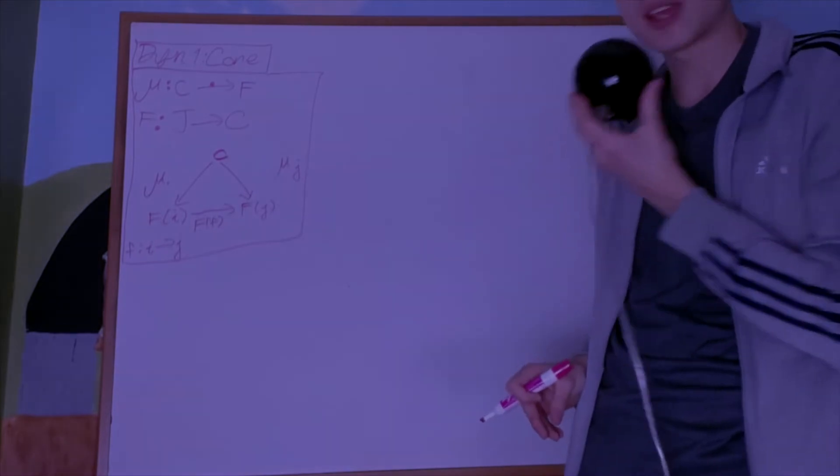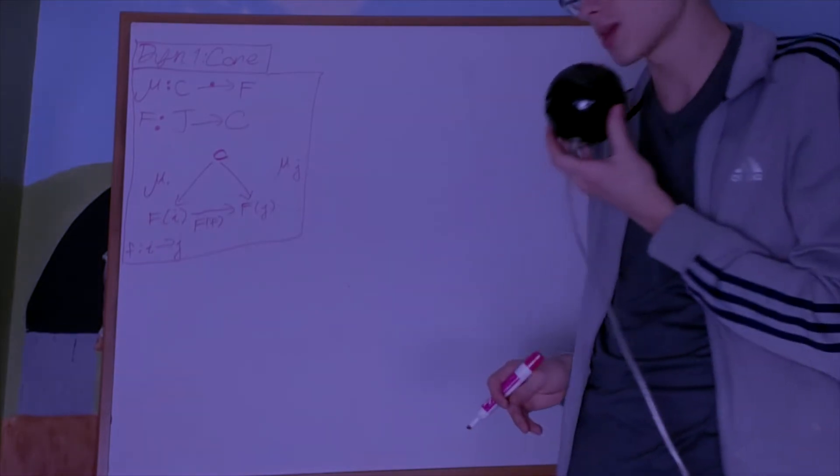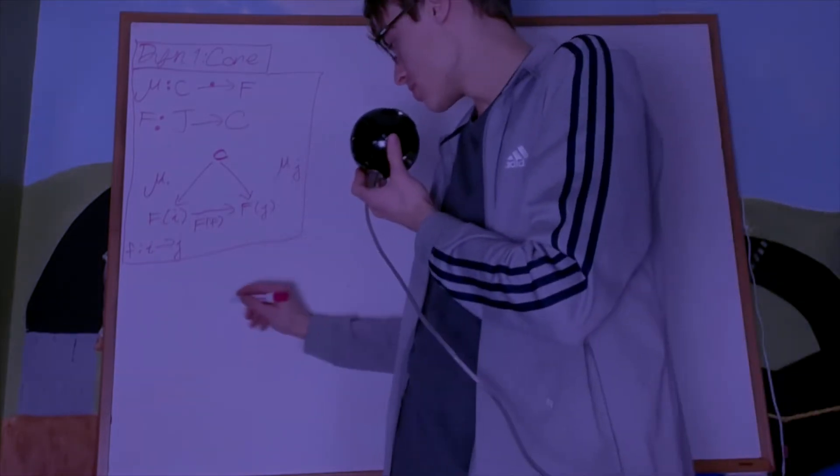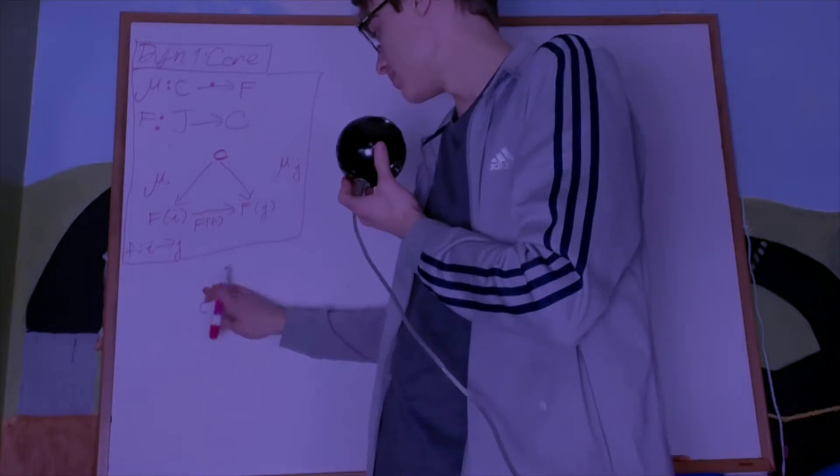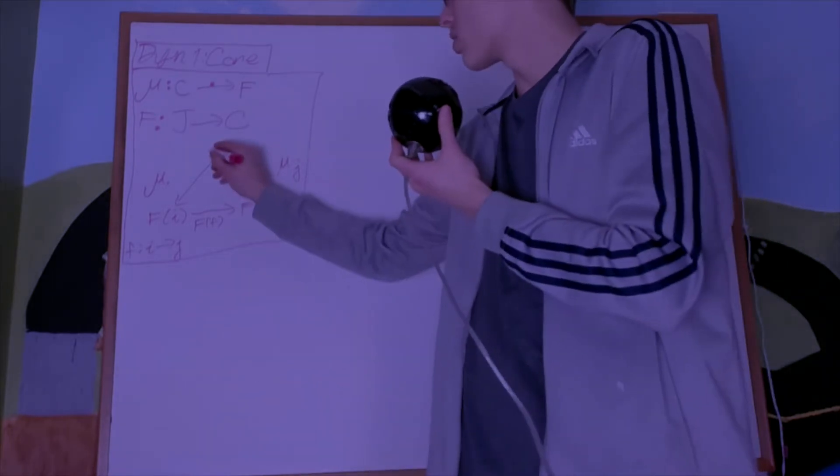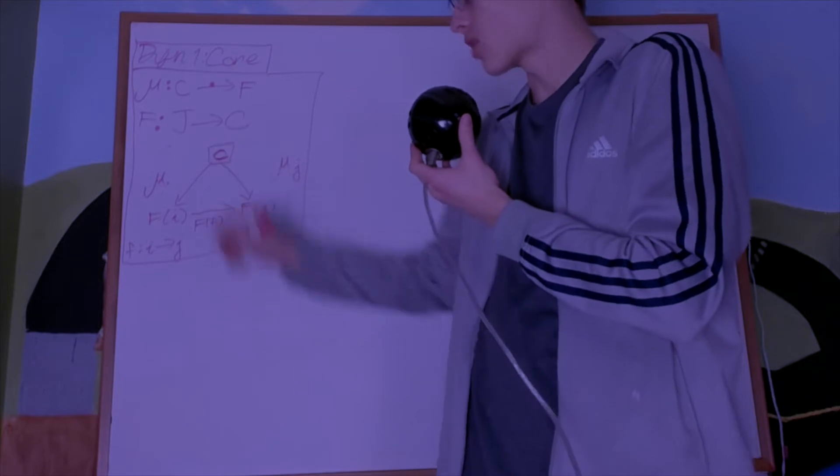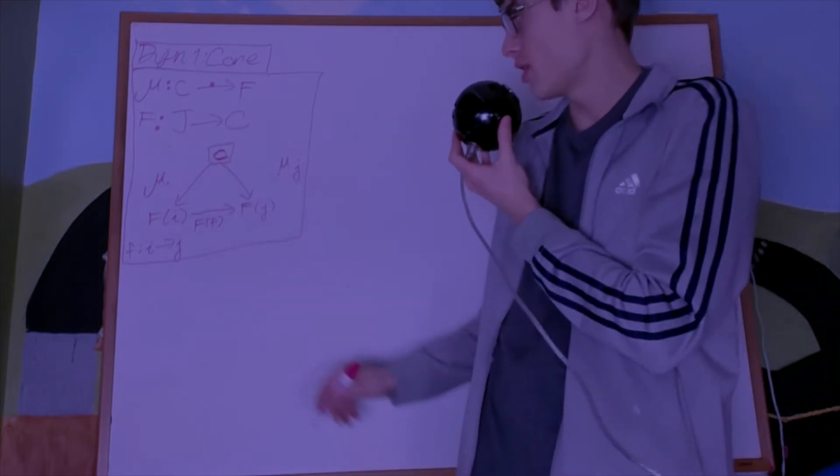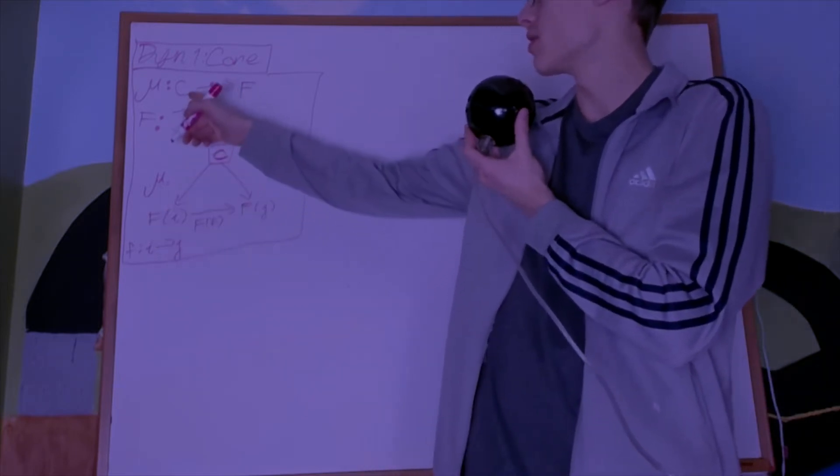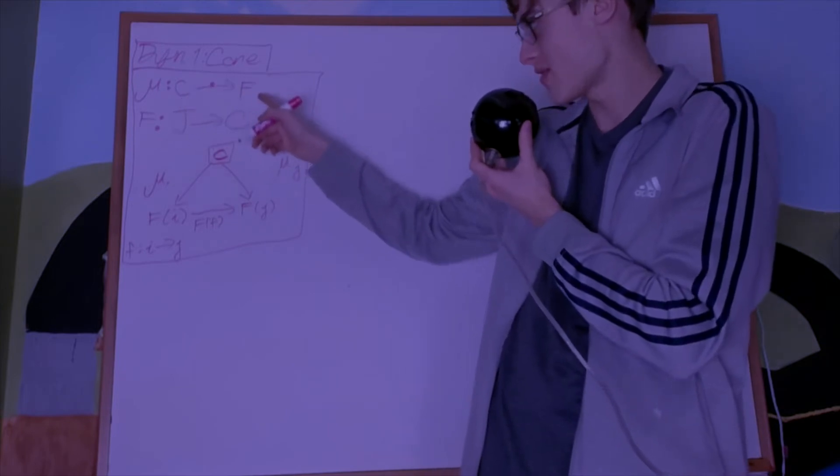And this has a universal property. Now we call C the vertex of the cone, and we call this a cone from C to F.